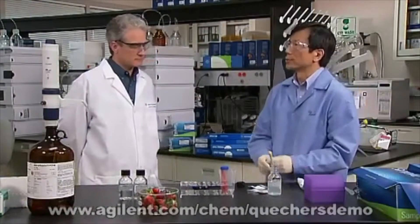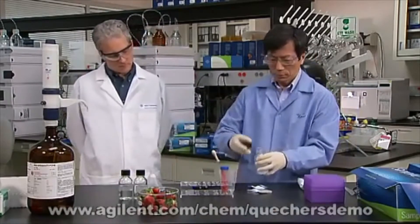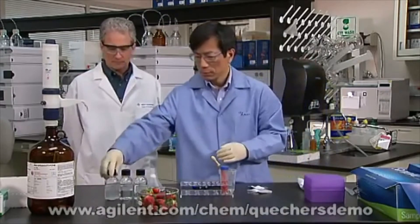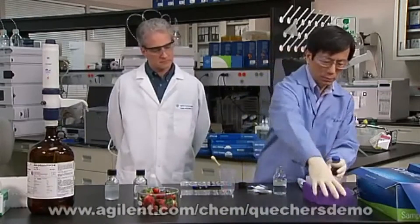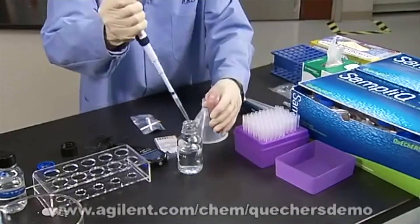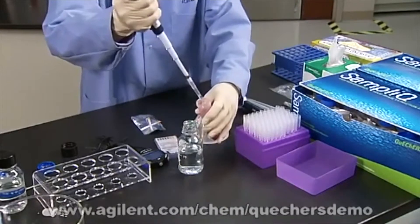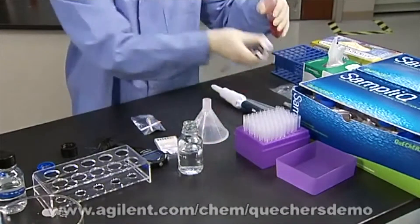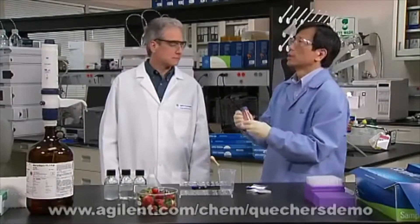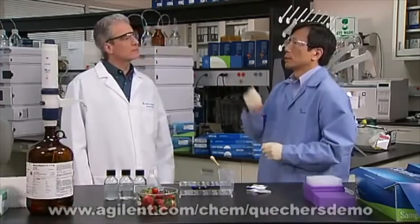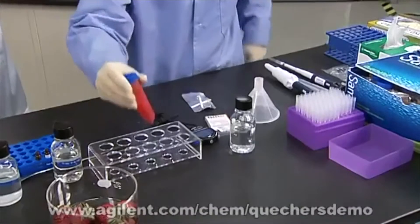Next, we want to add internal standard. For this purpose, we're going to add 20 microliters of internal standard. The internal standard we're using is triphenyl phosphate. Triphenyl phosphate has the right property to undergo quantitative methods for low fat matrices.